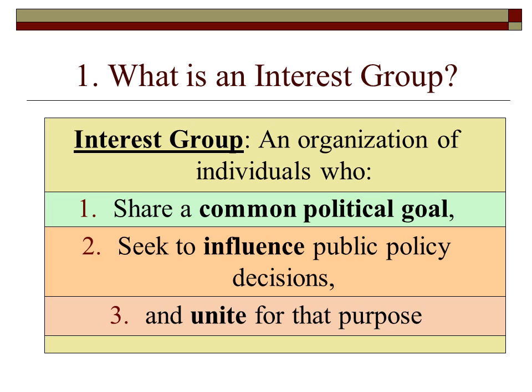One element by itself is not going to make it an interest group. A group has to come together and have a specific political goal, but if they don't come together to influence public policy decisions — like how members of Congress vote or how they debate on a certain topic — then they wouldn't necessarily be an interest group. Likewise, they have to unite for the specific purpose of influencing public policy.